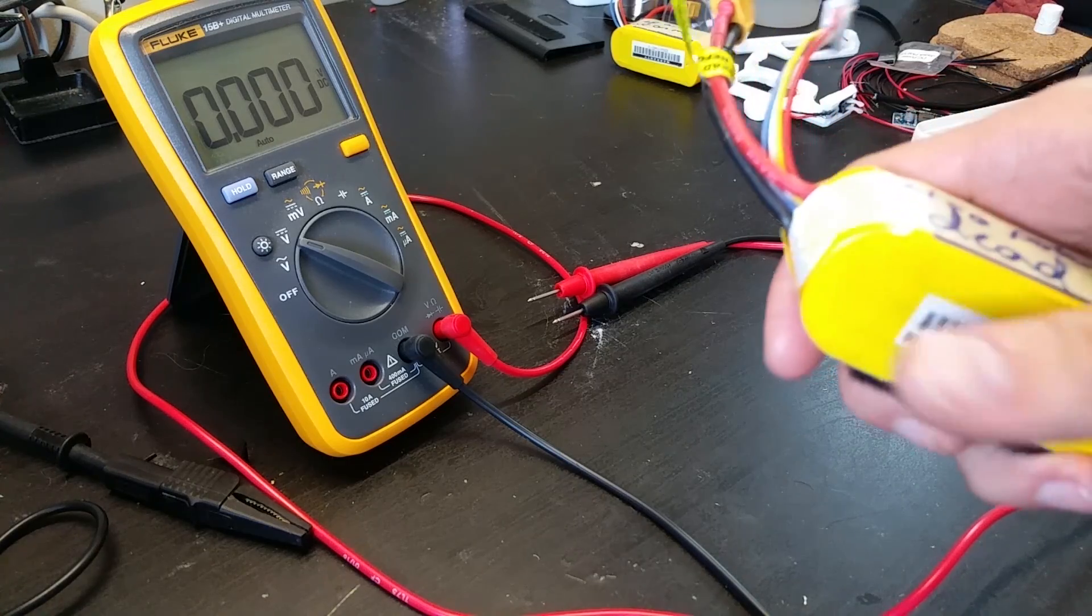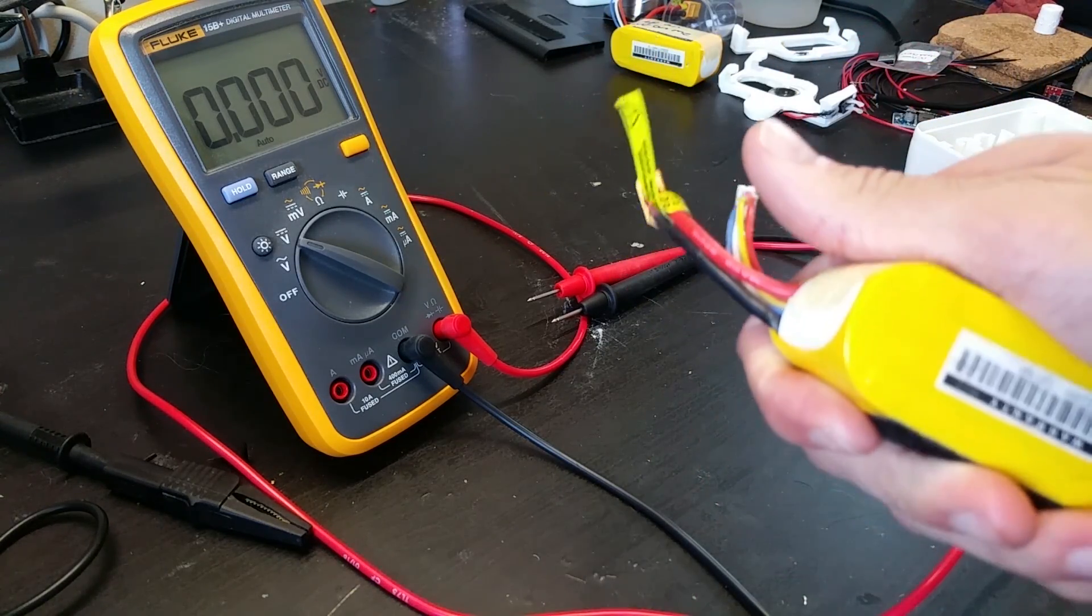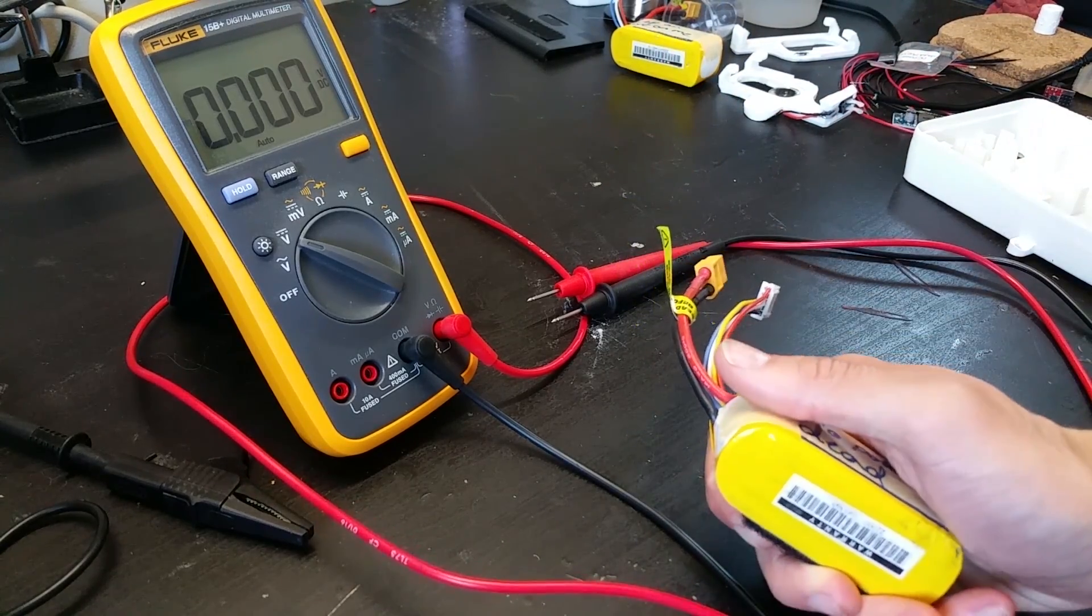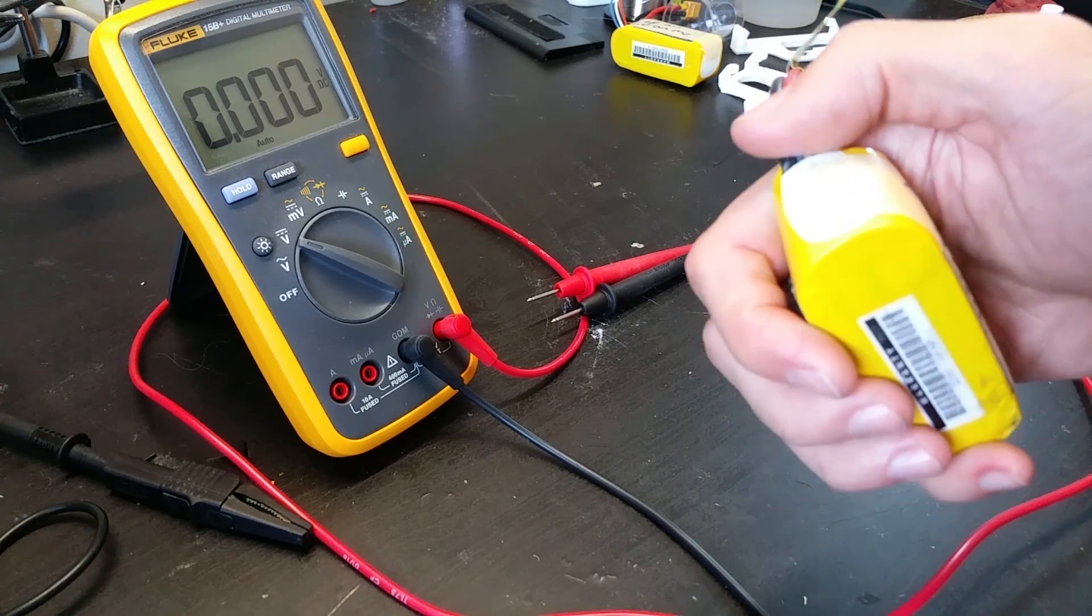I probably should have stopped charging that other cell around the 3.3 volt range because that's what everything else is at. So putting it on here will make it take a little bit longer. I'm a balanced charger with the cells that's uneven, but I'll put it on there anyway and we'll see how it is at the end.